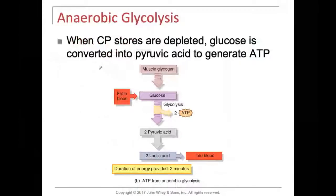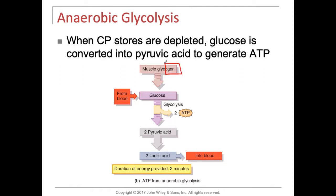Welcome back, everyone. In this next short video, we're going to talk about what happens when you don't have enough oxygen available — anaerobic glycolysis. We have glycogen. In an earlier video, I told you anything that ends in O-G-E-N is inactive. Now, glucose in high concentrations is toxic to us. Glucose in high concentrations is toxic to your blood vessels.